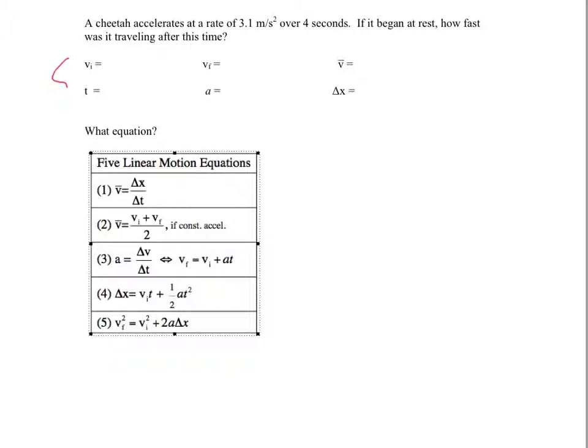So it's just a matter of going through the problem and trying to identify what we know. So the first thing it says is the cheetah accelerates, that's the key word there, at a rate of 3.1 meters per second squared. So the units alone should tell us it's an acceleration, but it also told us it's acceleration. So I'm going to say a is 3.1 meters per second squared.